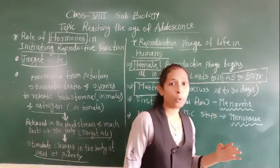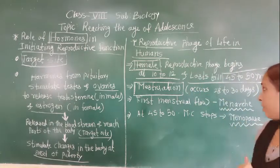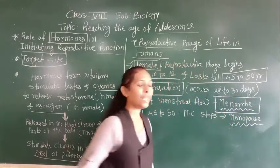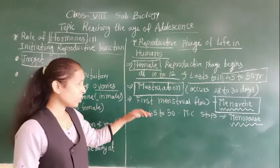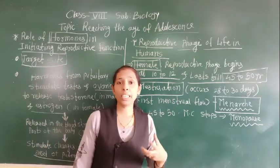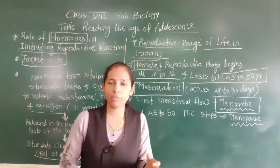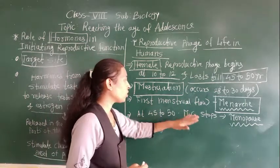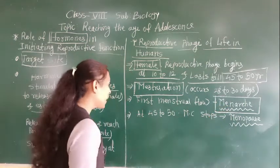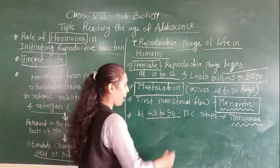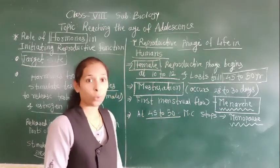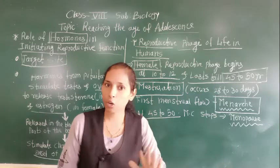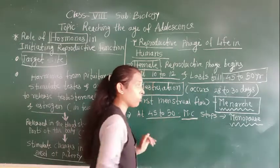The first menstruation flow that takes place in the female is called menarche. Initially, after it starts, it may be irregular and will take some time to become regular. This menstruation continues in the female up until the age of 45 to 50 years. After that, the menstruation flow gets stopped — the menstruation cycle comes to an end.